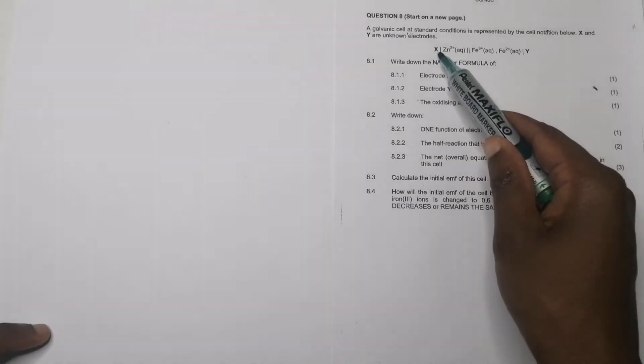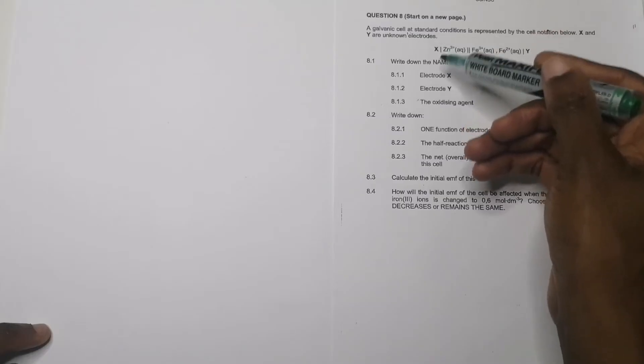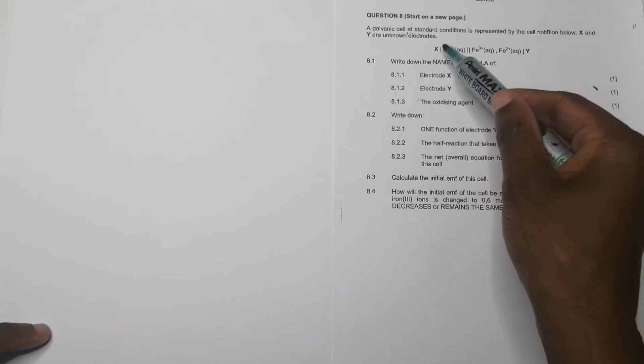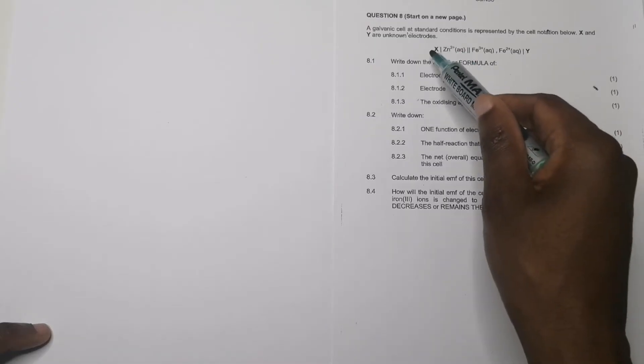We're given a galvanic cell at standard conditions. For those who may not have had their full lesson on this, please go to our full lessons and binge on them to learn how to answer questions based on the galvanic cell. They're giving us a galvanic cell at standard conditions represented by the cell notation below, with electrodes X and Y. Note the backslash in the notation — this indicates a change in phase, meaning the electrode changed phase and became aqueous, so this must have been zinc changing to Zn²⁺.